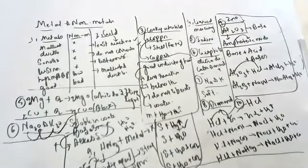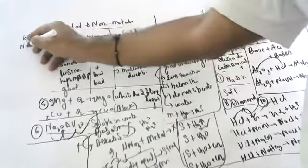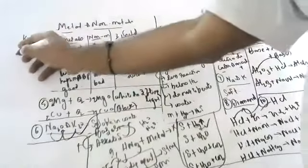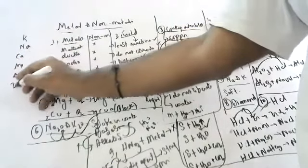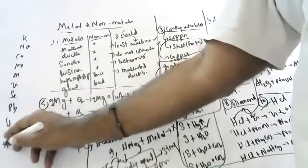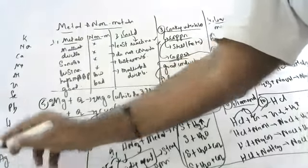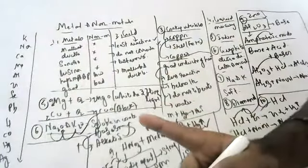What is the reactivity series of metals? It is the arrangement of metals in decreasing order of their reactivity. The series goes: potassium, sodium, magnesium, aluminium, calcium, zinc, iron, lead, hydrogen, copper, mercury - with sodium at the highest reactivity end. Gold and platinum are at the least reactive end.